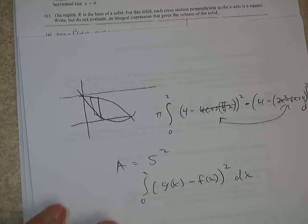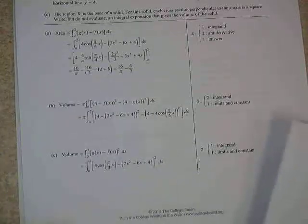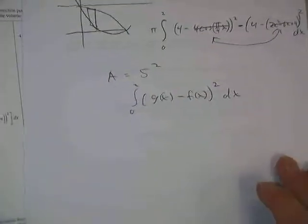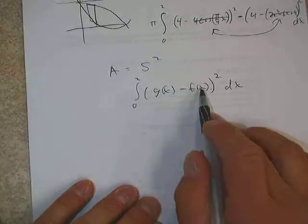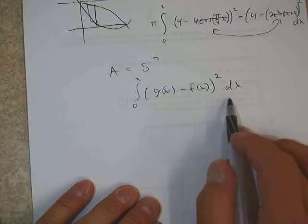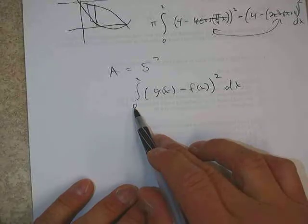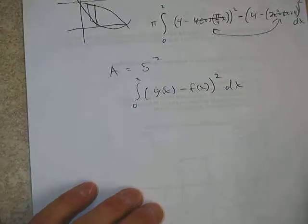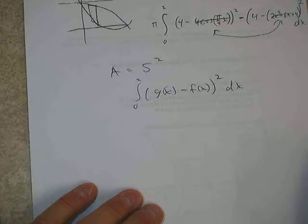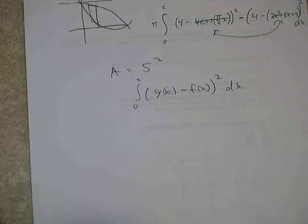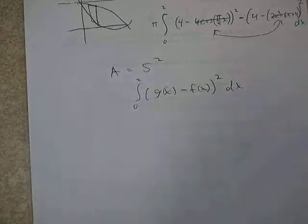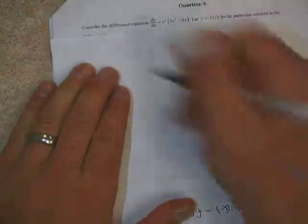And if we write an integral from 0 to 2 of that, then we're good to go. They gave two points for that. One for having the integral right, top minus bottom all squared, and one for having the limits. And that's it. Questions on part of that one, number five.